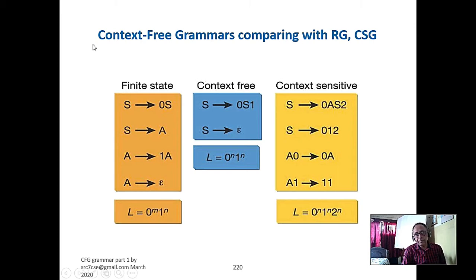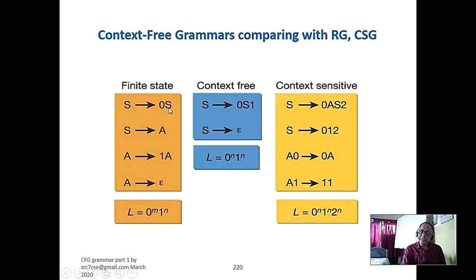Now, what are the rules of this grammar? The rules can only be: left-hand side a single variable, and right-hand side a single terminal and a variable; or right-hand side a number of terminals and a single variable; or only one terminal. This is the rule of a regular grammar. And if the variable comes at the end, we call this right linear grammar.